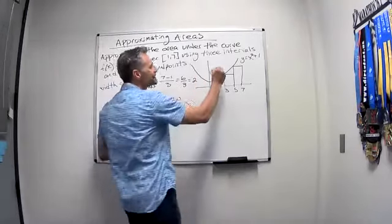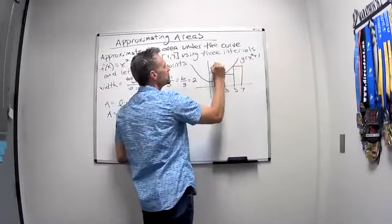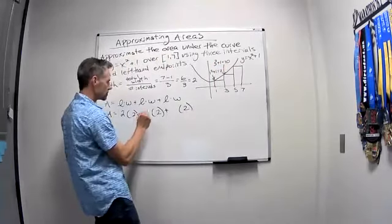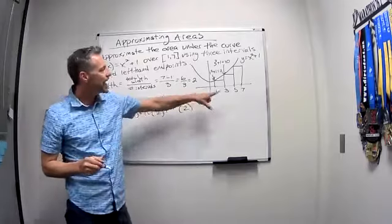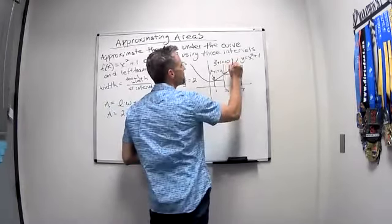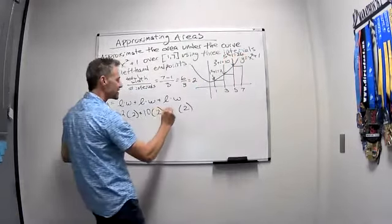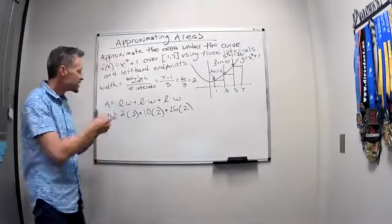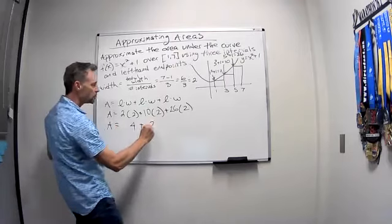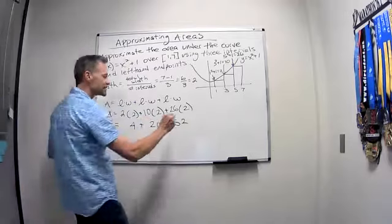The next one at this height, it's 3 is the x, so 3 squared plus 1. So that one's going to be a 10. And then the last one is going to be from the 5, 5 squared plus 1, 26. And that gives me that height. And now I just multiply and add together to find out what my total area is. So I get 4 plus 20 plus 52. So I get 76. And that's my answer.